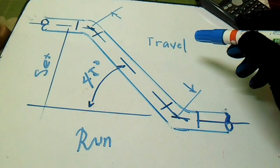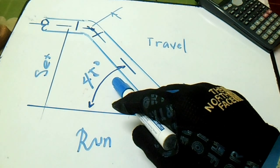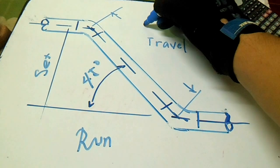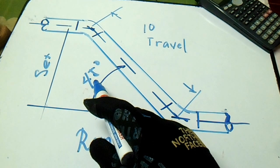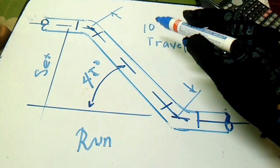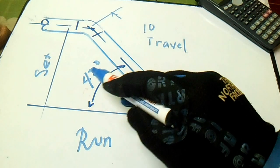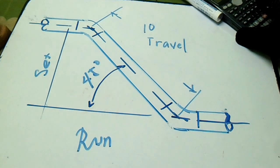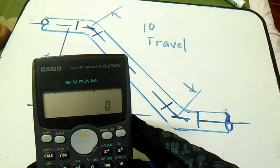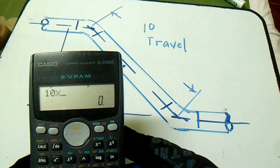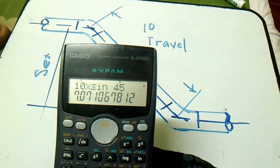We will compute the set using travel and 45 degrees. If we have a given travel of 10 and 45 degrees, the procedure is to multiply travel by sin(45°). So: 10 multiplied by sin(45°) equals 7.07.